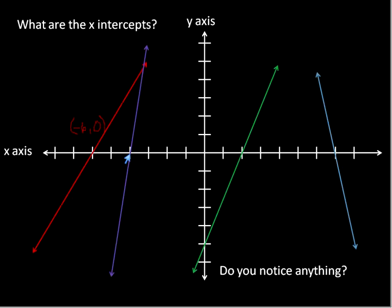Now let's look at our purple line. We count negative 1, negative 2, negative 3, negative 4. So we have the point (negative 4, 0), because it doesn't move up or down off of the x-axis — that's where it crosses the x-axis right there. Our green line crosses the x-axis at the point (2, 0), because it crosses right here.